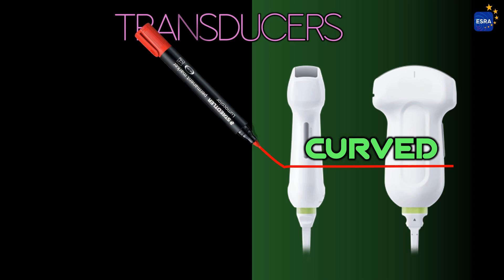Additionally, due to the divergent nature of their ultrasound beam, curved array transducers generate a broad field of view, particularly in deeper regions, making them particularly advantageous for spinal imaging.